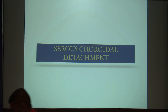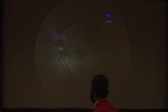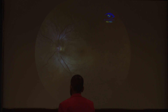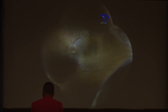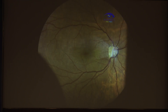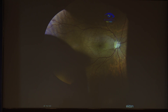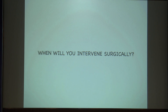Coming to serous choroidal detachment, which is a complication of hypotony: you may not see it in a fundus photo, but if you see the mosaic photo, you can beautifully see the choroidal detachment. CD can come along with a hypotony maculopathy. CD is basically caused by a leak — identify what the problem is, whether it's a bleb leak or flap over-filtration, correct it first, and the CD will come down.